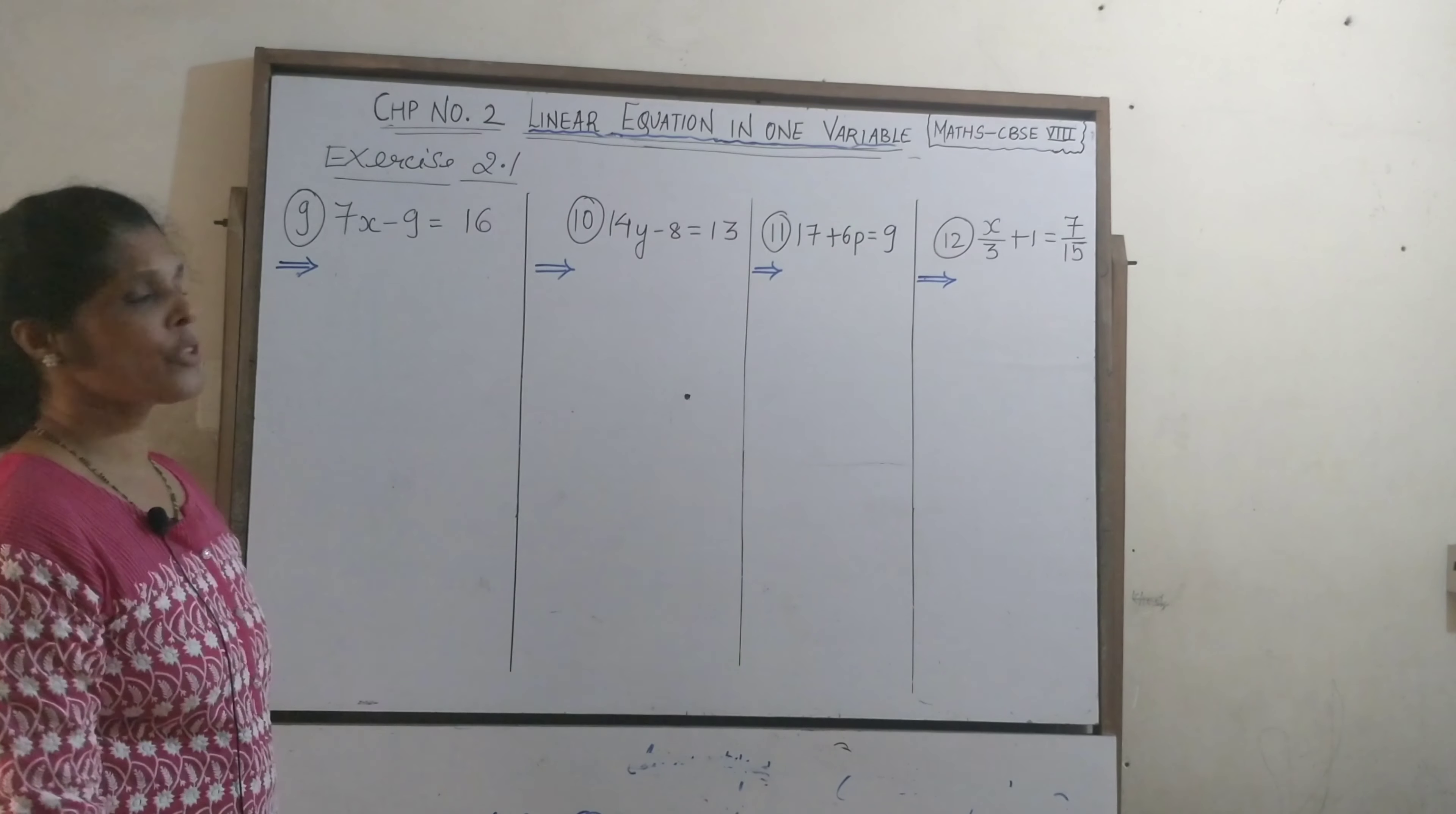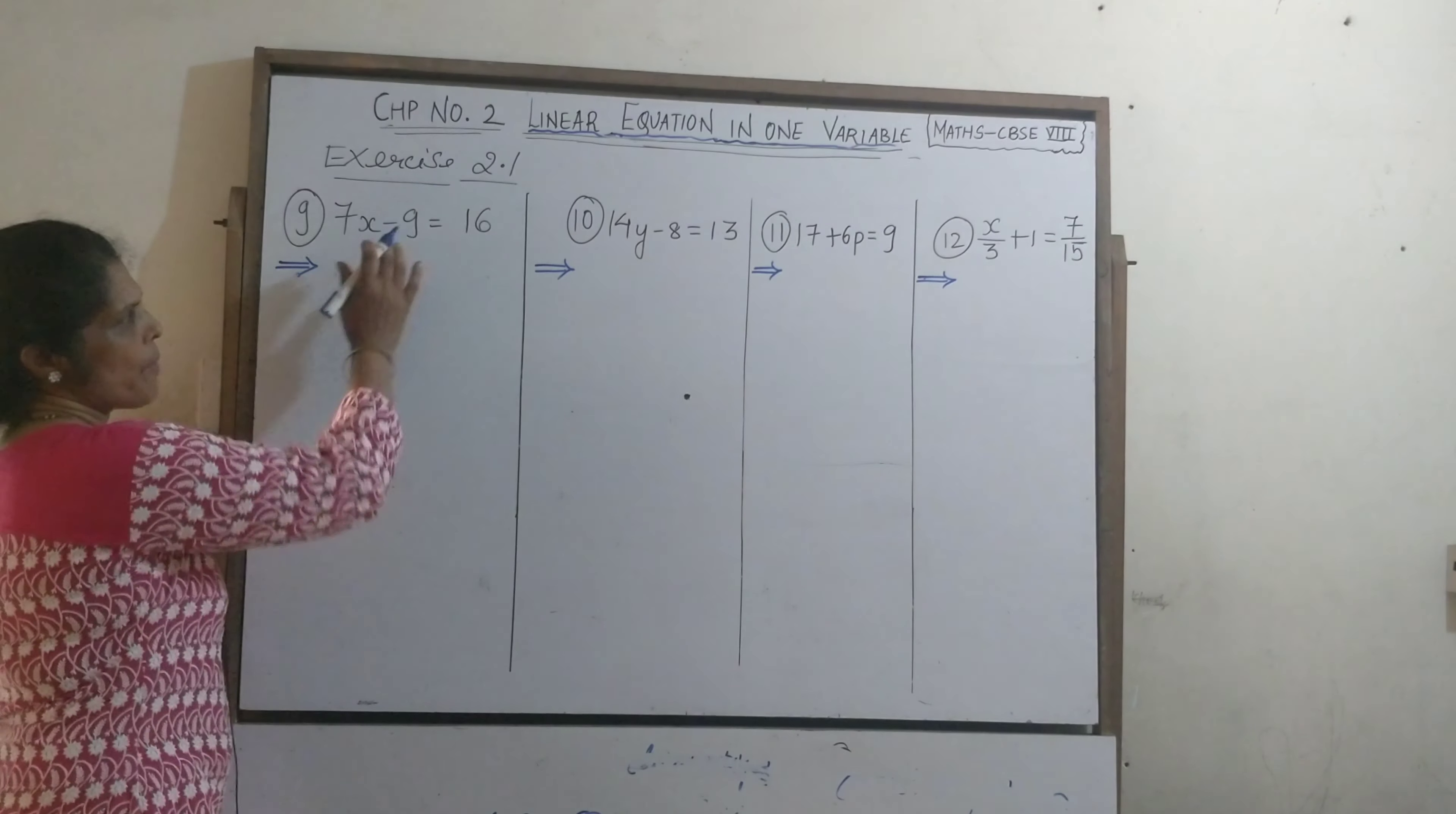Hello students, now we will continue question number 9. 7x minus 9 is equal to 60.